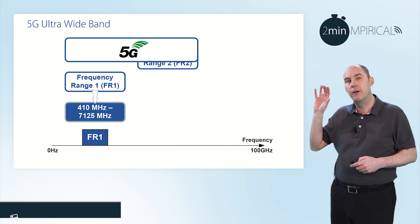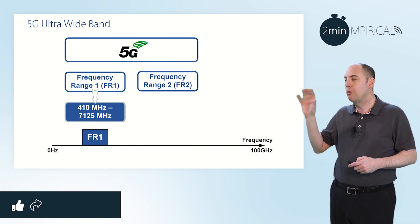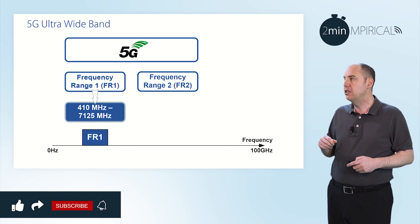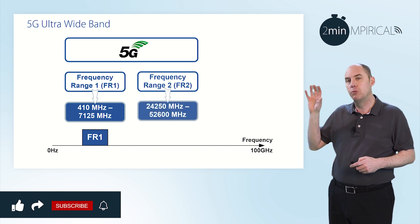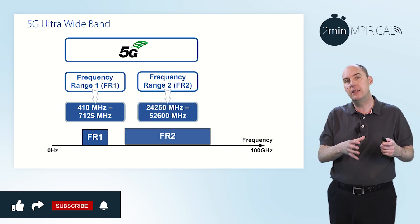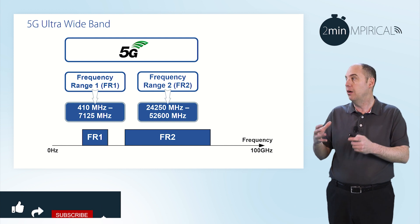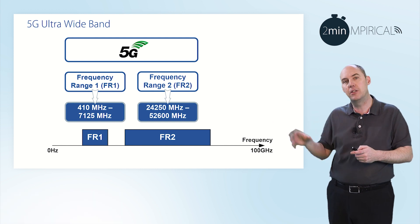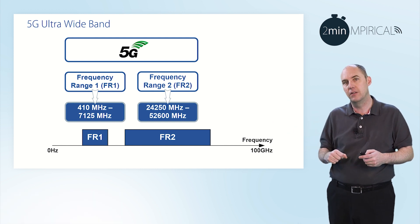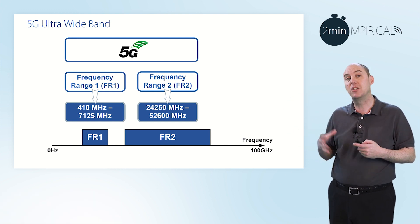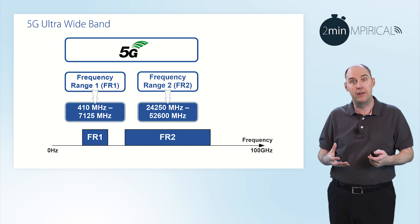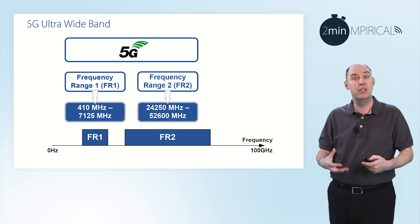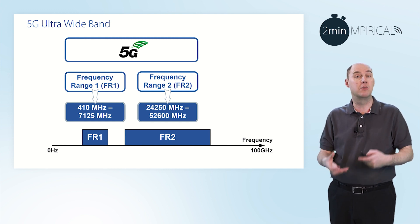We also have frequency range two. Frequency range two runs between 24 gigahertz and approximately 52 gigahertz, and typically this is referred to as high band. So when we start deploying 5G, you typically refer to it as low band, mid band, and high band — and frequency range two is the high band.